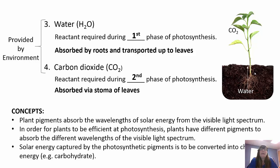Some important concepts: plant pigments absorb the wavelengths of solar energy — so if you're asked on a quiz, it's plant pigments that absorb the wavelengths. For plants to be efficient at photosynthesis, they need these different pigments because there are different wavelengths of light to absorb. The solar energy captured by those pigments is then converted into chemical energy, like a carbohydrate.